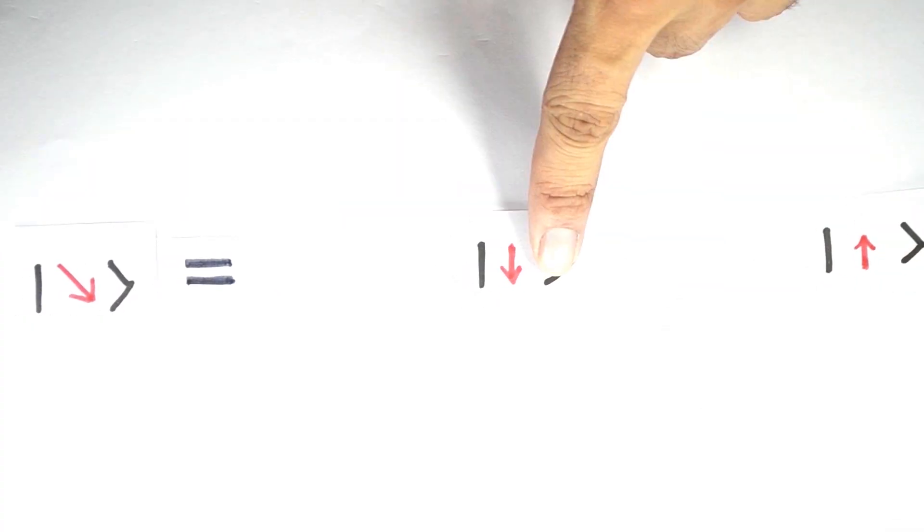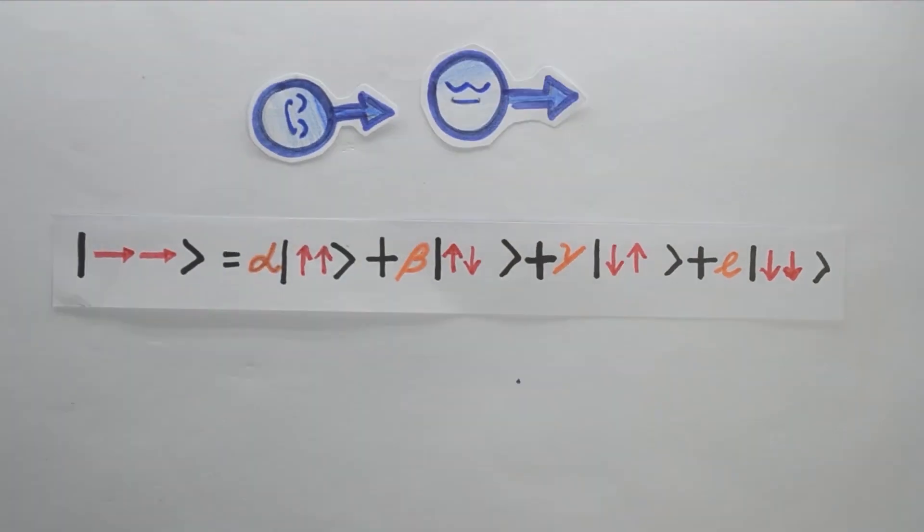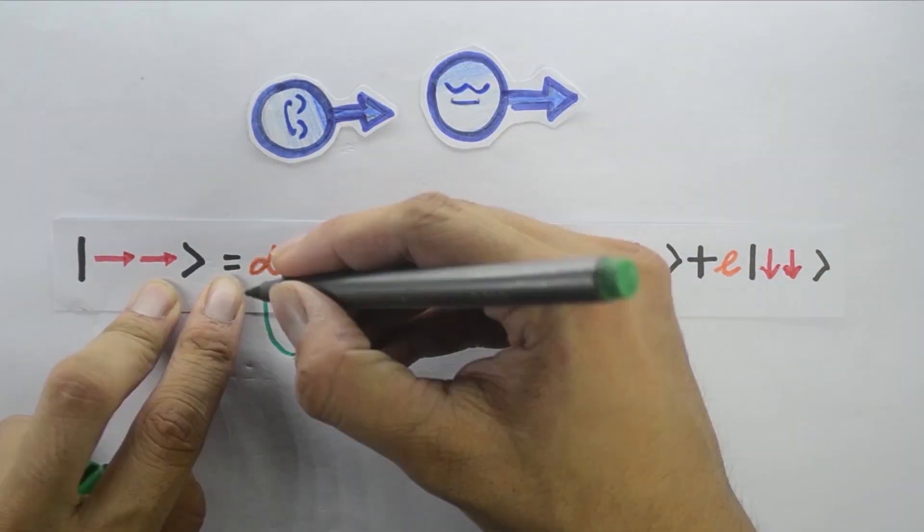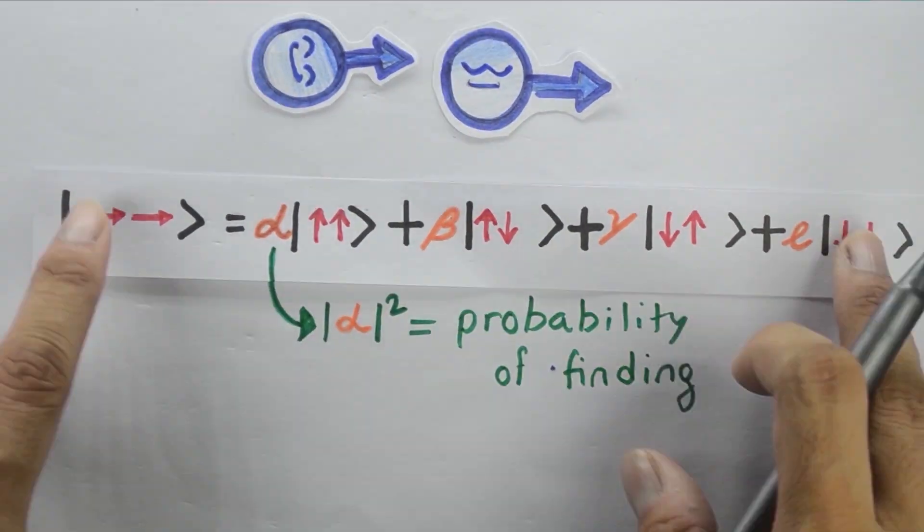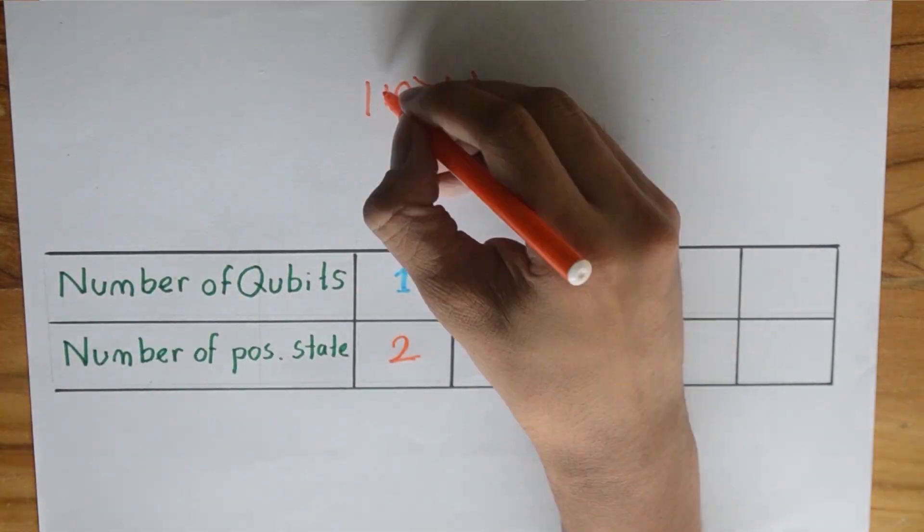Where we can choose to have both options as an input. Changing the spin's direction, we can change the probability of each option. Similarly, with greater number of qubits, we sum their combinations to form an input. The information we can process at a time increases with the number of qubits.